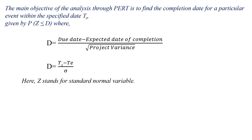The main objective of this analysis is to find the completion date for a particular event with a specified date. The probability is given by P(Z ≤ D), where D = (TeS − Te) / sigma. Here, TeS is the due date, Te is the expected date of completion determined by the critical path, sigma is the root of project variance, and ZD is the standard normal variable.